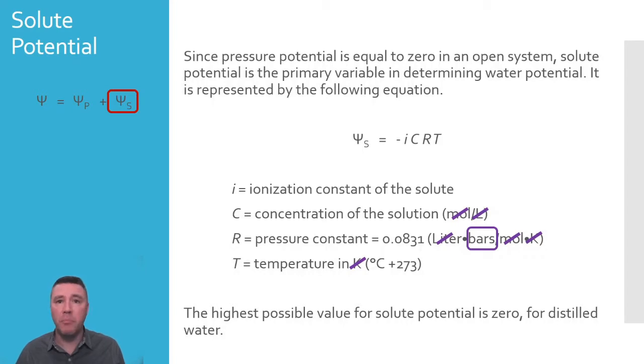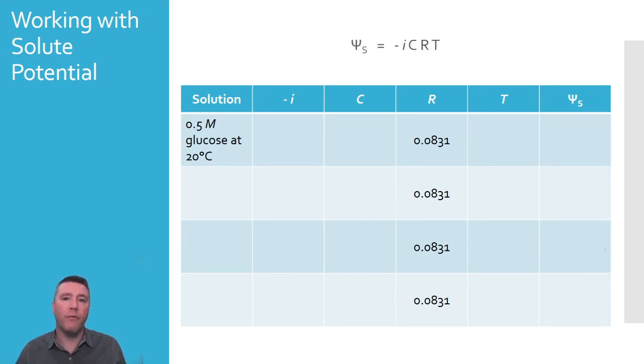In fact, this wouldn't even be a solution because it is represented by distilled water with a concentration of zero and has no solutes whatsoever. Now let's take a look at some practice at working with the solute potential equation. We're going to explore a variety of solutions individually as well as comparatively to see how changing the value of the variables ultimately affects solute potential. Our first example is 0.5 molar glucose at 20 degrees Celsius. Because glucose does not ionize in water, this value is 1.